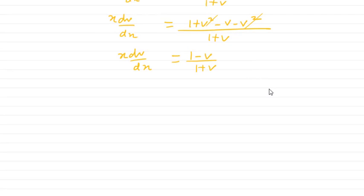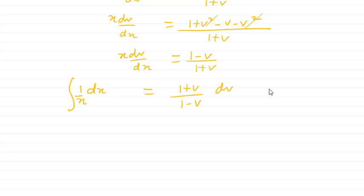Now we separate the variables. Rearranging, we get (1 + v)/(1 − v) dv = (1/x) dx. The left side has v terms and the right side has x only, so we're ready to integrate both sides.